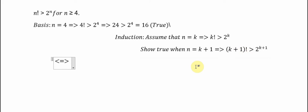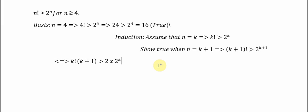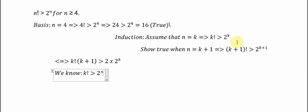In the k plus 1 factorial, we write it as k factorial times k plus 1, and we have 2 to the power k. Since k factorial is greater than 2 to the power k, and k plus 1 is greater than 2,